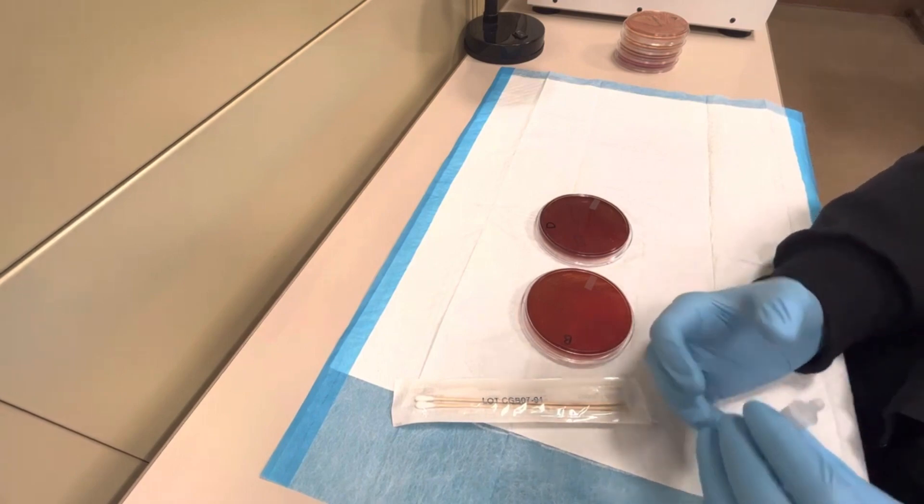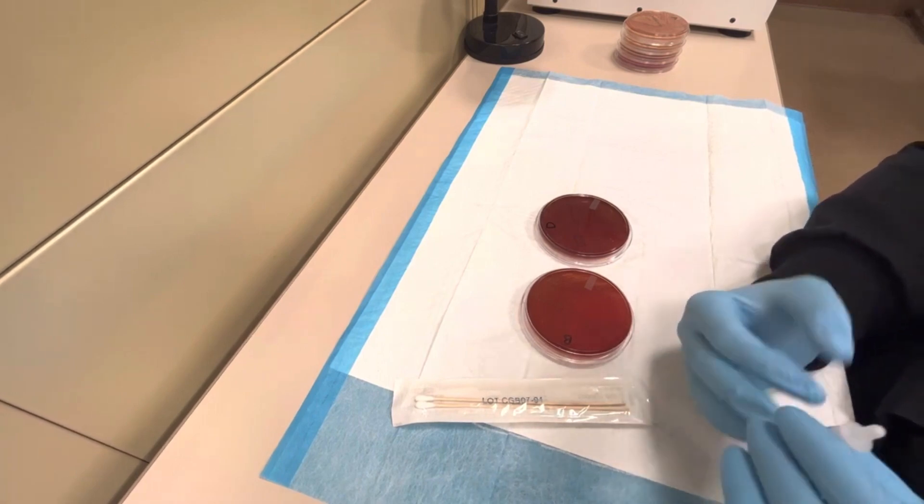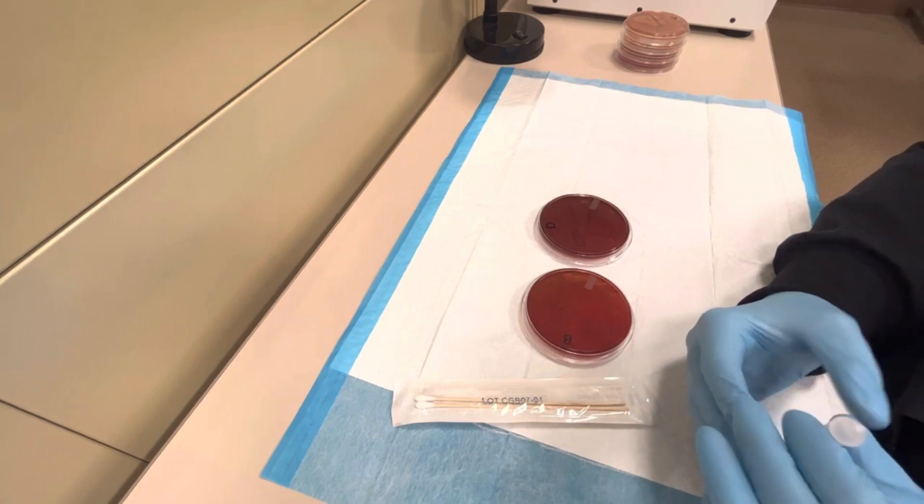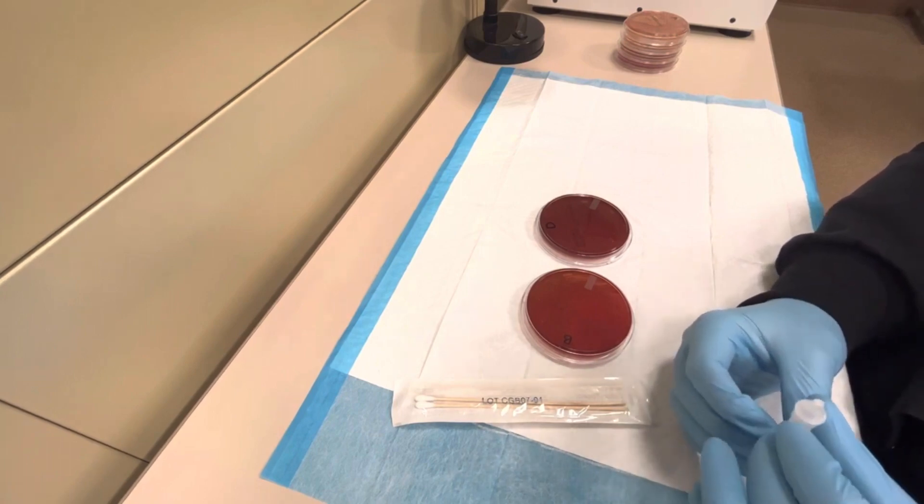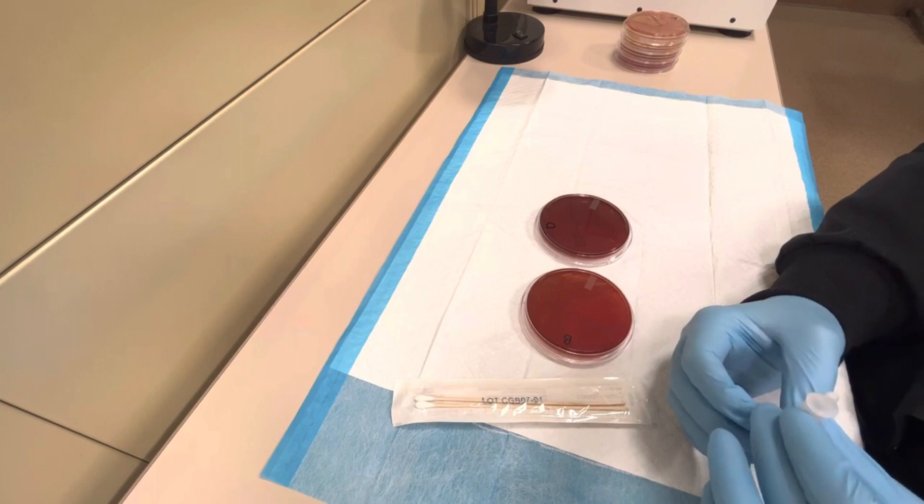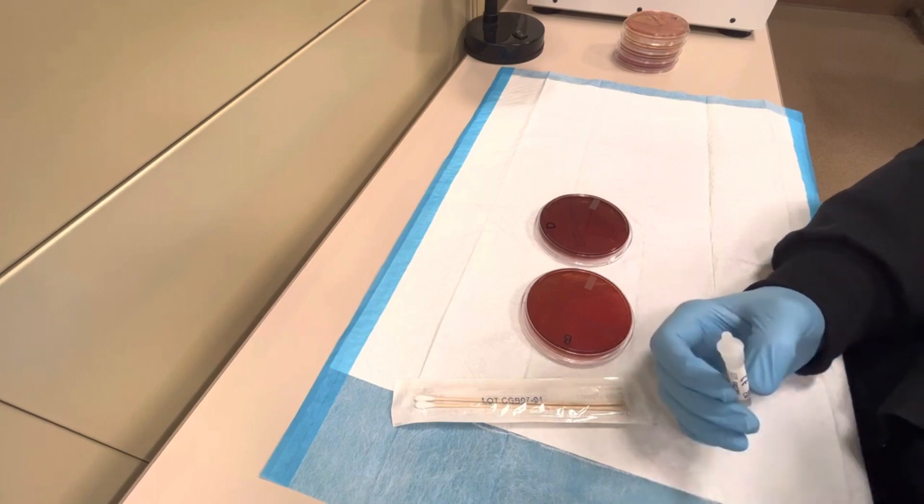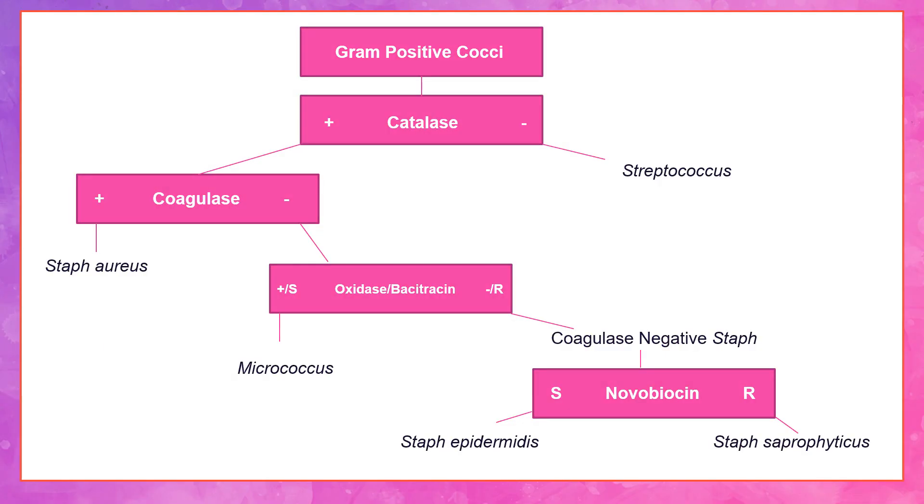Now that we understand what the test is, you're probably wondering why this test is performed in the first place. Why do we even care if an organism produces this cytochrome C oxidase enzyme? If you're a microbiology student, you've seen these bacterial flowcharts. These flowcharts provide a visual aid for quick identification of bacterial species. This gives us an idea of why we perform the oxidase test.